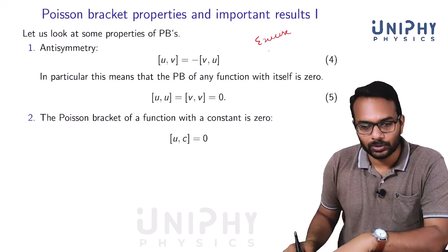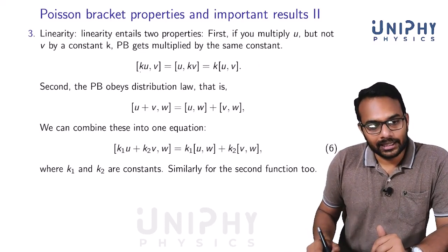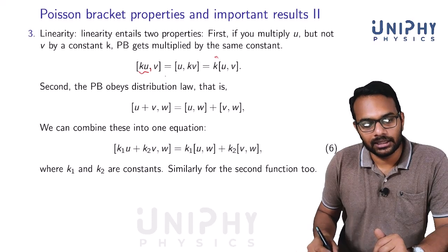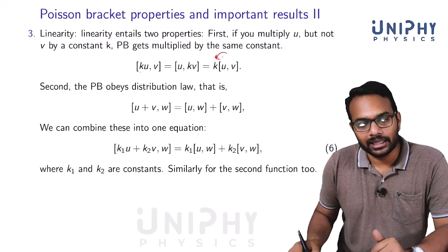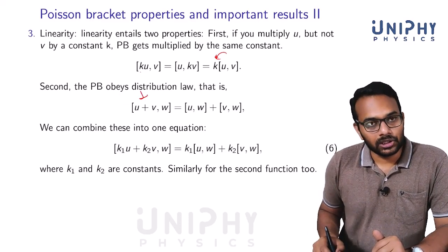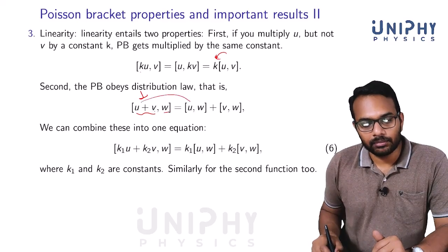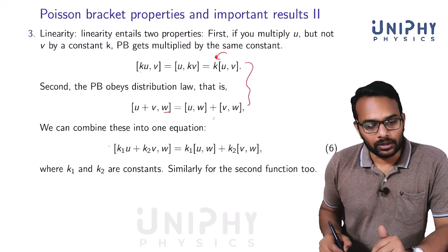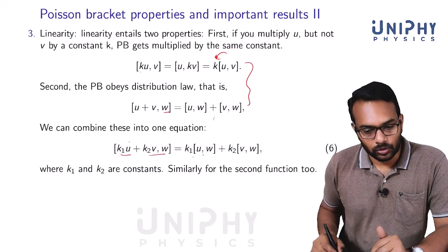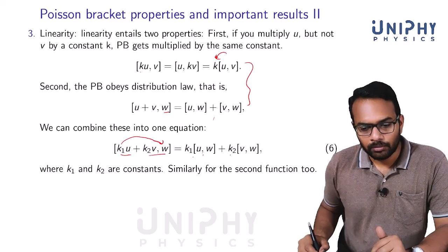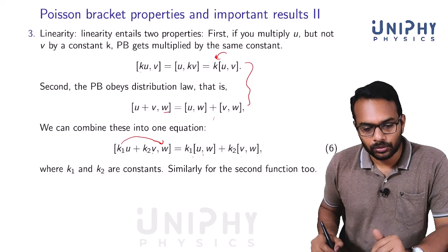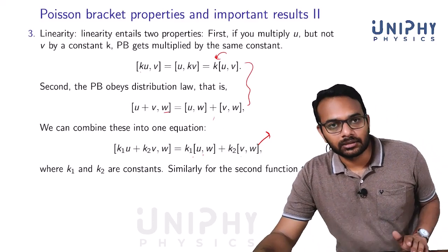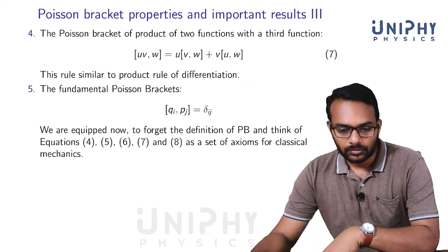Another property is linearity: if you have a constant k multiplied by u, then {ku, v} = k{u, v} — you can pull the constant k outside. It also obeys the distribution law: {u+v, w} = {u,w} + {v,w}. Combining both: {k₁u + k₂v, w} = k₁{u,w} + k₂{v,w}, where k₁ and k₂ are constants. The same can be said for the second function.